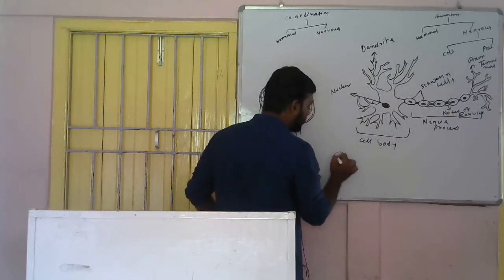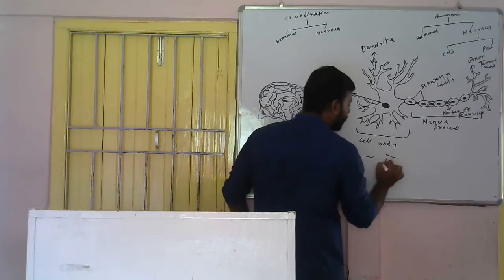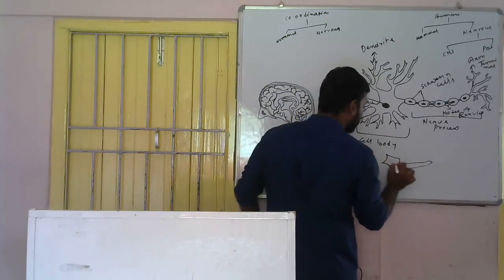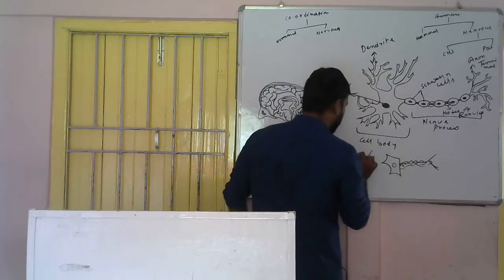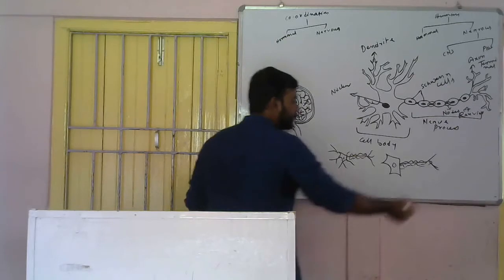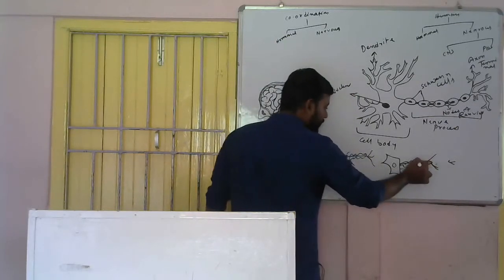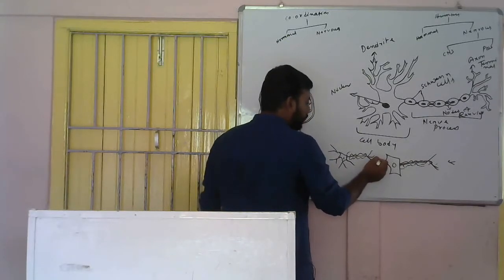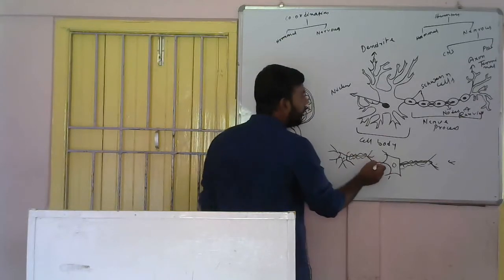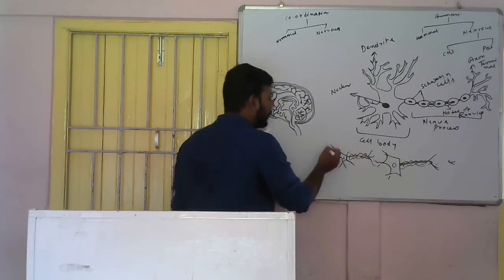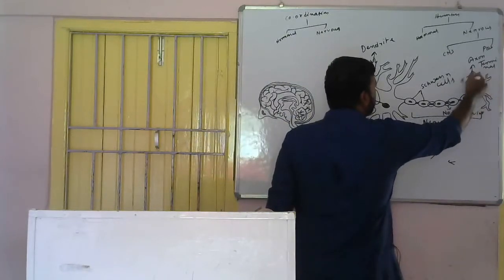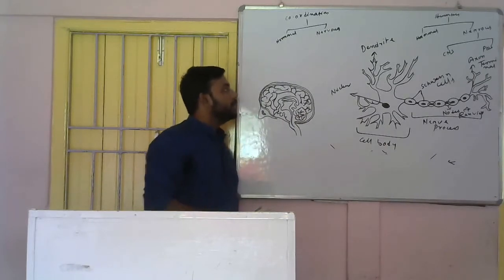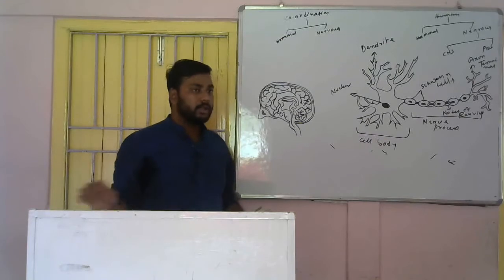In the nerve processes, we see Schwann cells and constrictions between each cell called nodes of Ranvier, and at the end there are axon terminals. The nerve cell will conduct impulses: it receives the electrical impulse, transmits it through the cell, and passes it to the next nerve through the axon terminal. The electrical impulses are received through the axon terminal and transmitted to the next nerve through the dendrites.